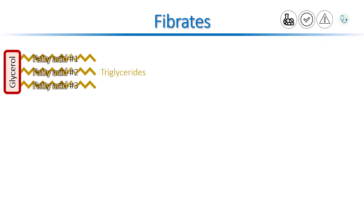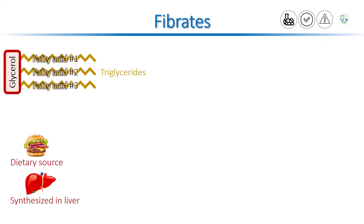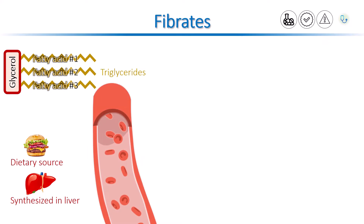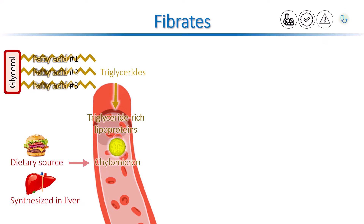Triglycerides come from two sources: they come from the food we eat, and they can also be made in the liver. Triglycerides are not water-soluble, so they cannot travel freely in the blood — they are packed in triglyceride-rich lipoproteins. Within the blood vessels, chylomicrons carry a large amount of dietary triglyceride, and very low-density lipoproteins mainly carry triglycerides produced in the liver.